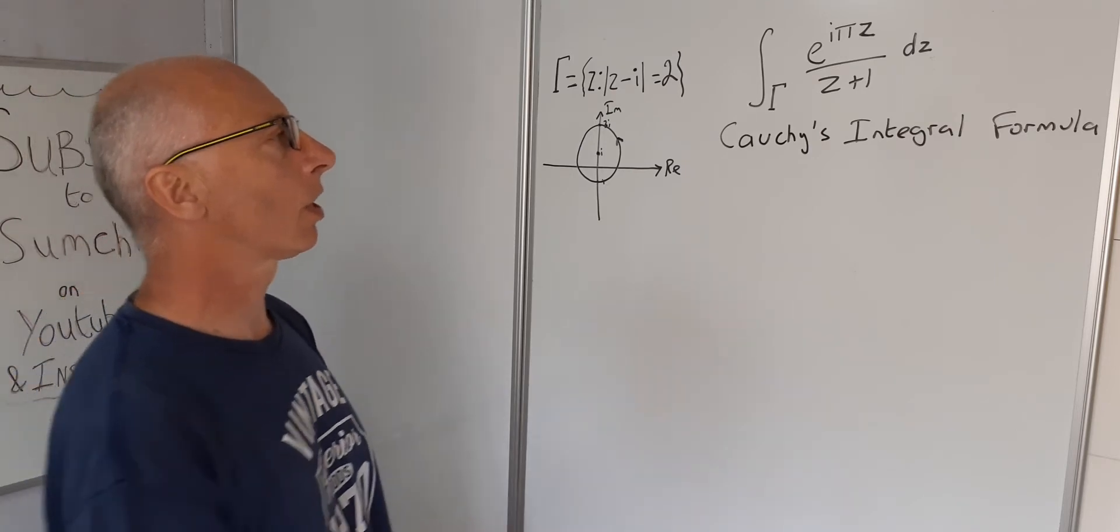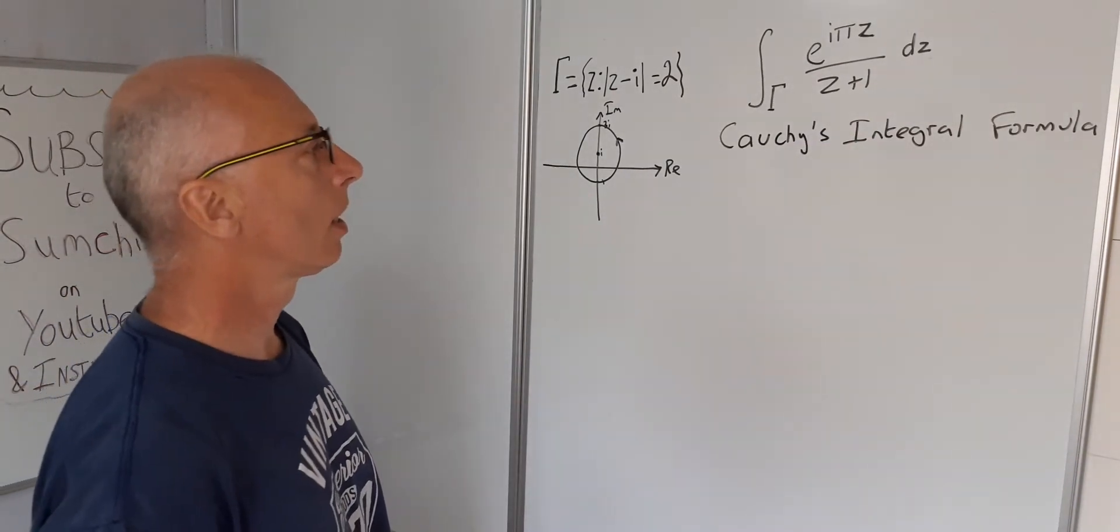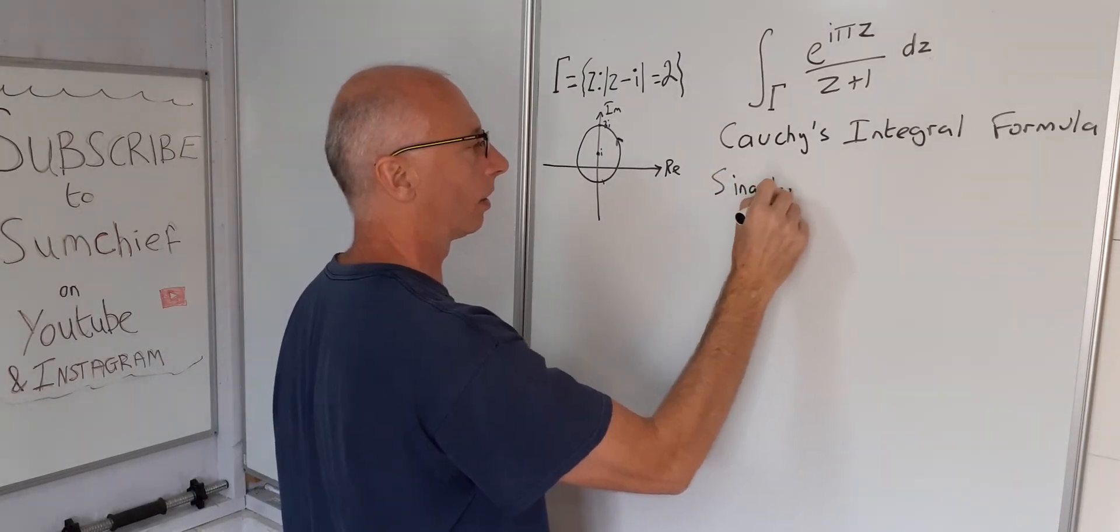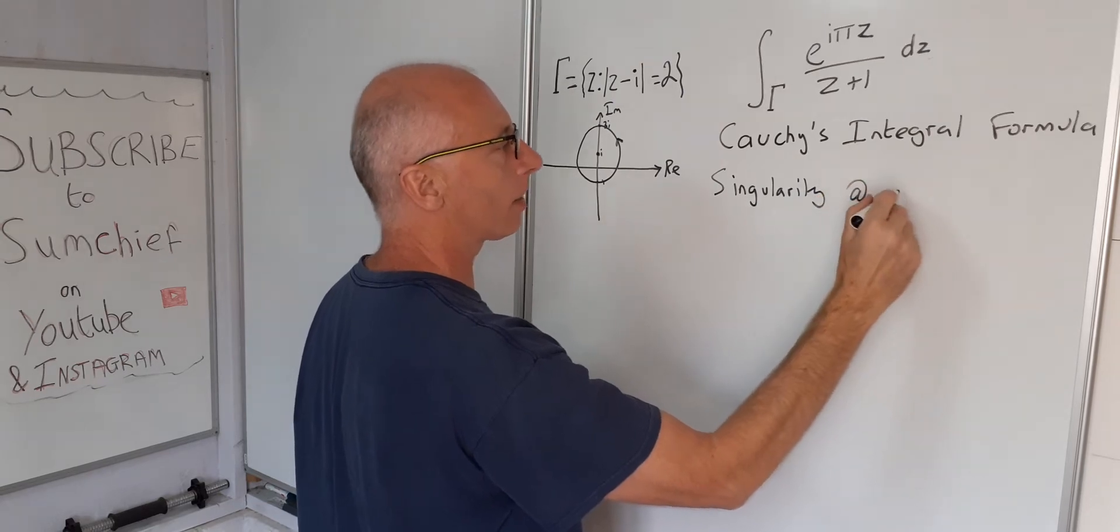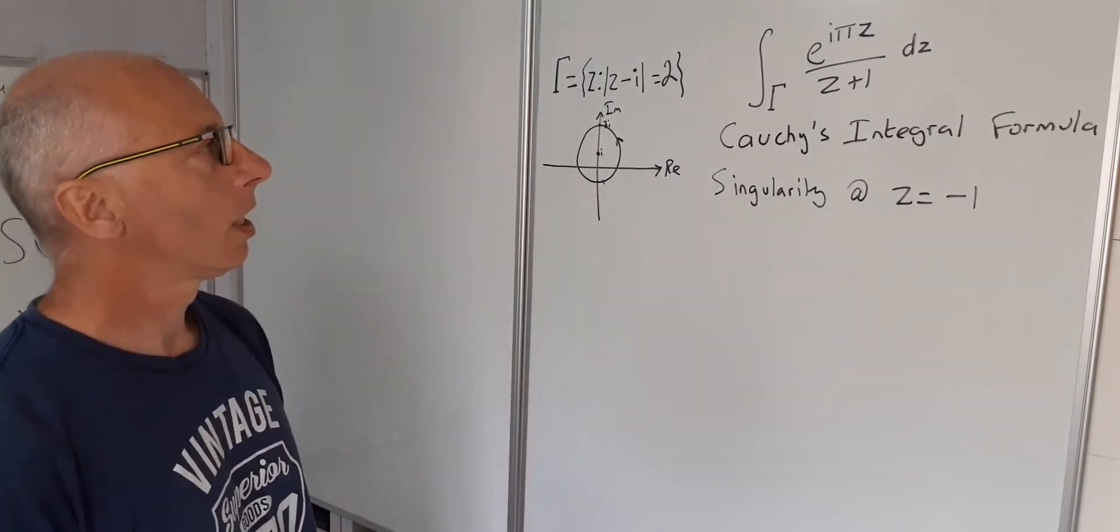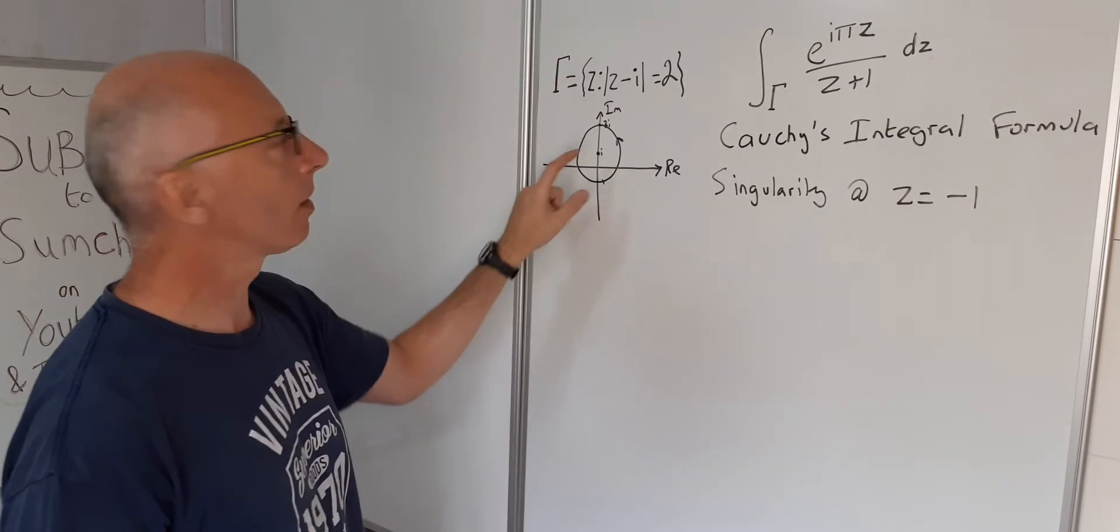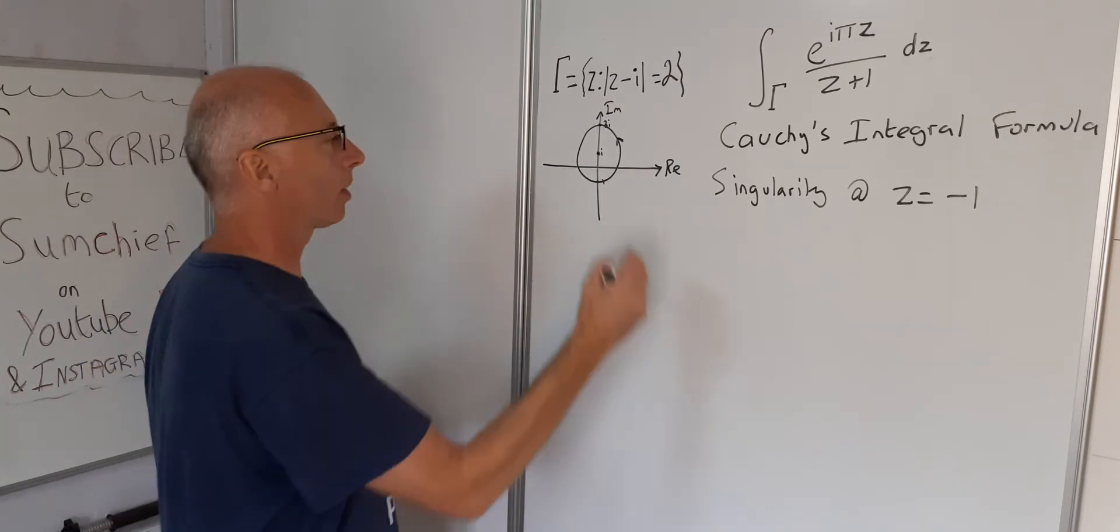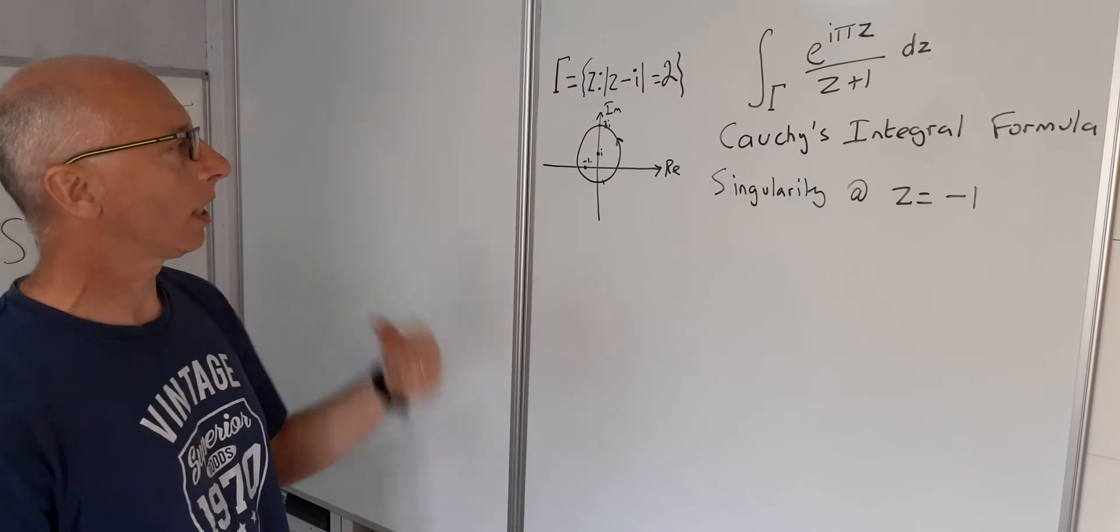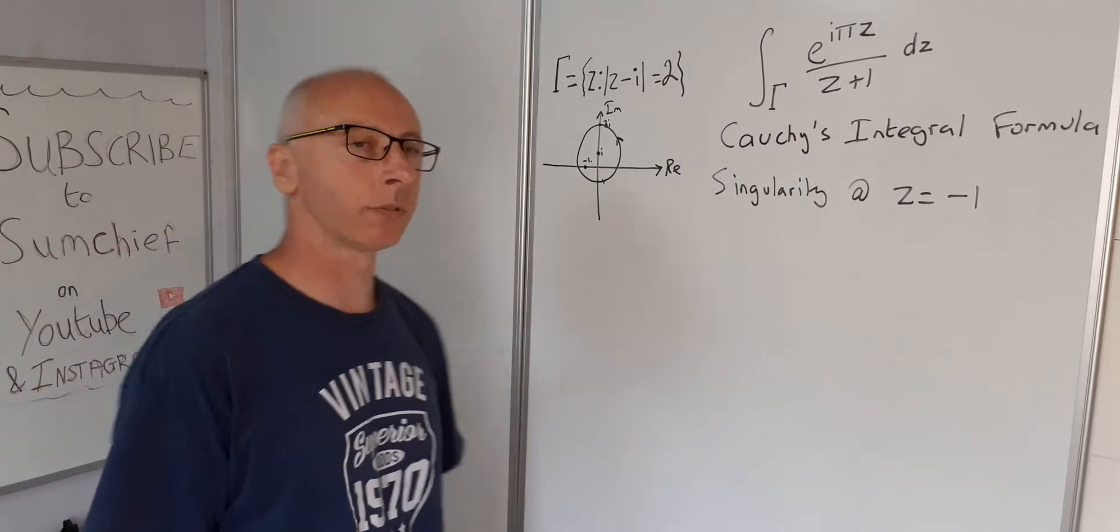The next thing we see is we've got a singularity in this integral here. So the singularity is at Z equals minus i. The next thing we need to look for is the point minus i inside this simple closed contour. So minus i is here, so it's going to be inside. So there's another condition for Cauchy's integral formula.